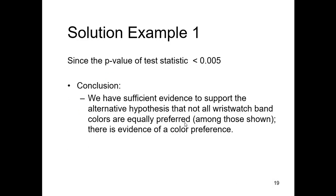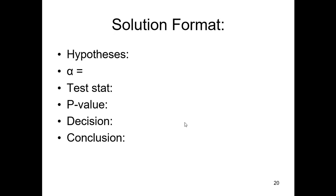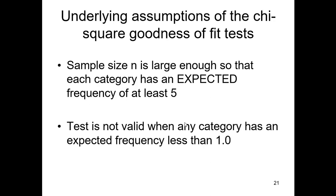And what's our conclusion? Well, we have sufficient evidence to suggest or to support that not all wristband colors are equally preferred. There is evidence of a color preference. So just again, just to restate, we start off our process, same as always, we have a hypothesis, we have our alpha, we have the test statistic, the P value, the decision, and the conclusion. And nothing, no difference, nothing unique with this particular test other than that.